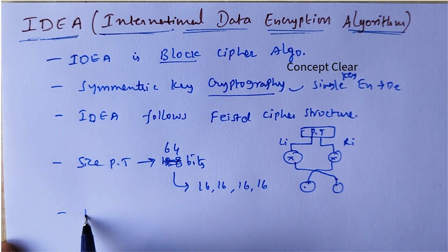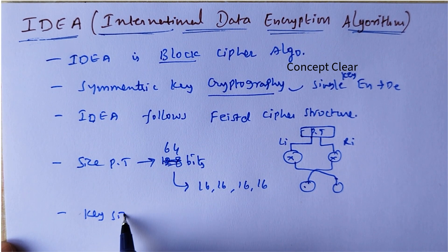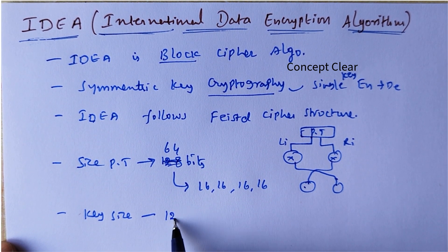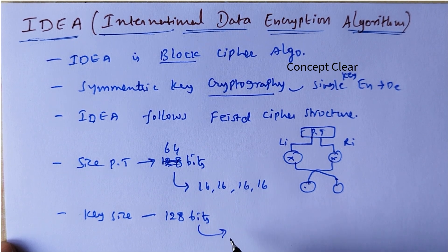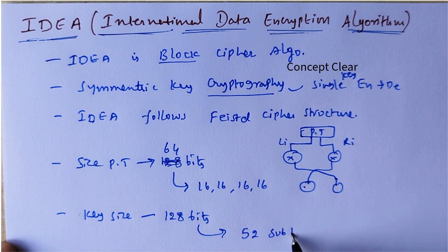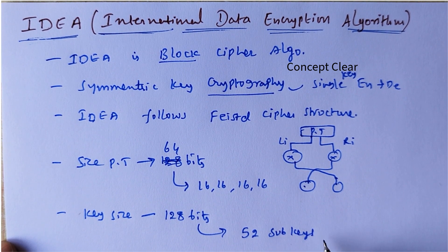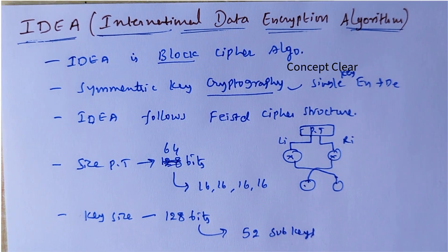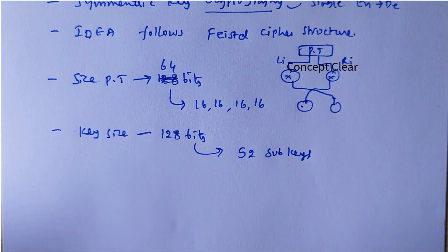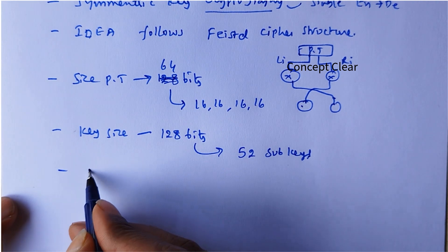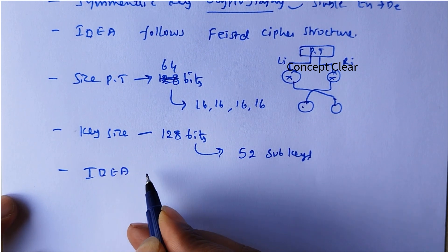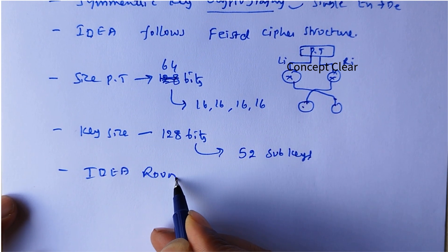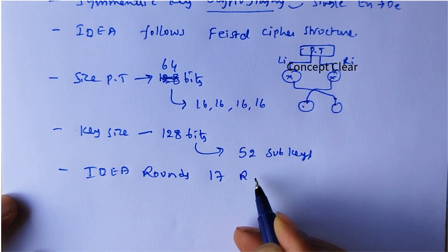What is the key size? The key size in the IDEA algorithm is 128 bits. These 128 bits will be divided into 52 sub-keys. The IDEA algorithm contains a total of 17 rounds.